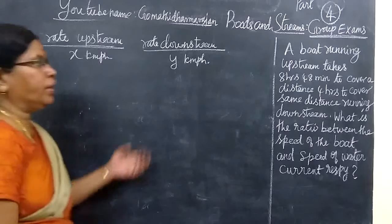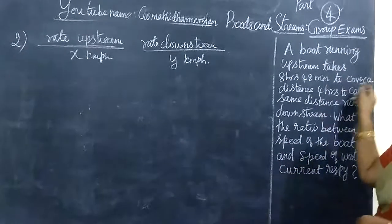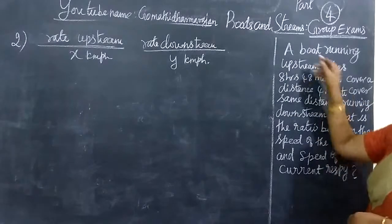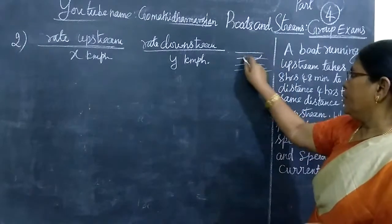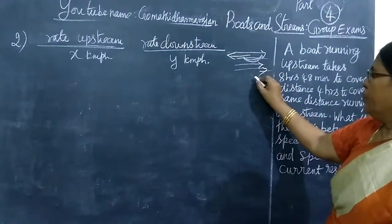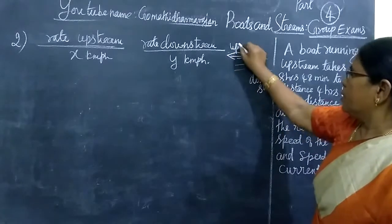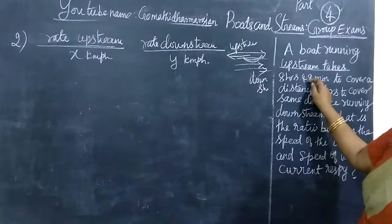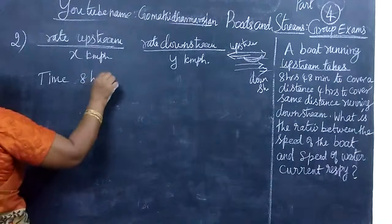Now see the second question. Here it is given: a boat running upstream takes 8 hours 48 minutes to cover a distance, and 4 hours to cover the same distance downstream. The boat is running upstream, then downstream. Time taken for upstream equals 8 hours 48 minutes.